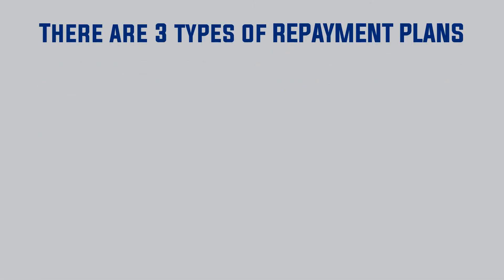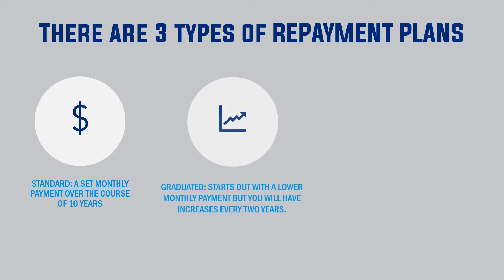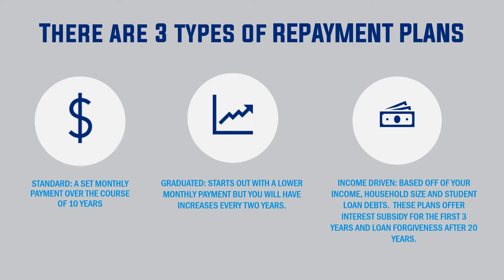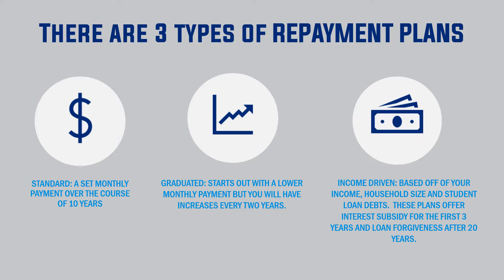There are three types of repayment plans: standard, graduated, and income driven. The standard repayment plan is a set monthly payment over the course of 10 years. The graduated repayment plan starts out with a lower monthly payment, but you will have increases every two years. And the income driven repayment plan is based off of your income, household size, and student loan debts. These plans offer interest subsidy for the first three years and loan forgiveness after 20 years.